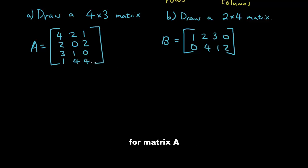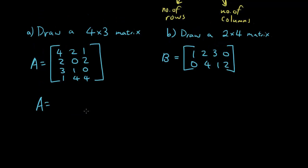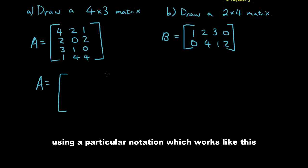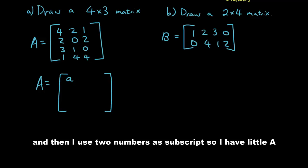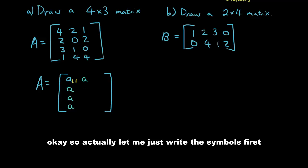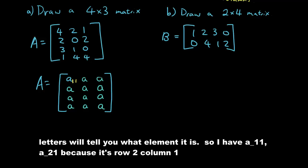So for matrix A, you can see here A is a capital letter. Now if I want to refer to a specific number within matrix A. How I refer to that is using a particular notation which works like this. So I use little a and then I use two numbers as subscript. So I have little a and I'm going to put row 1, column 1. So actually let me just write the symbols first.